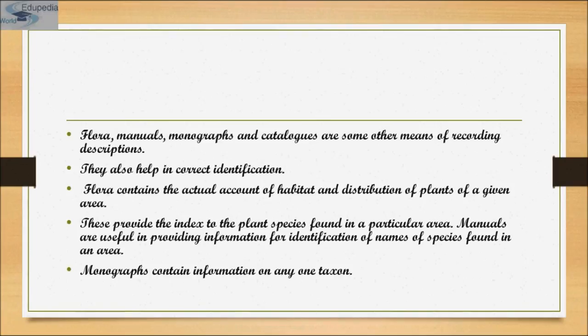Flora, manuals, monographs, and catalogs are some other means of recording descriptions and help in correct identification. Flora contains actual accounts of the habitat and distribution of plants of a given area, providing an index to plant species found in a particular area. Manuals are useful in providing information for identification of names of species found in an area. Monographs contain information on any one taxon.